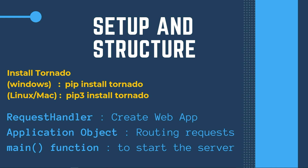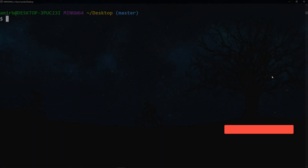Let's check out the setup and structure of a Tornado web application. You install it with pip install tornado (or pip3 install tornado on Linux/Mac). The structure has three parts: a RequestHandler to create the web application, an Application object for routing requests, and a main function to start the server.